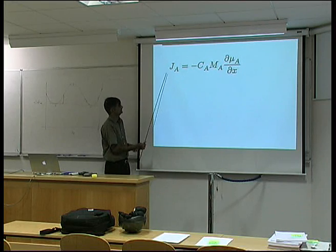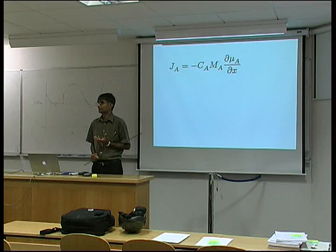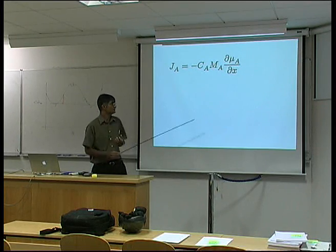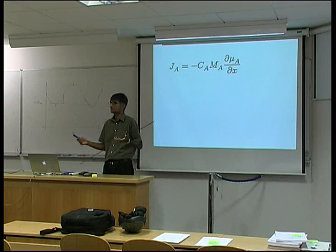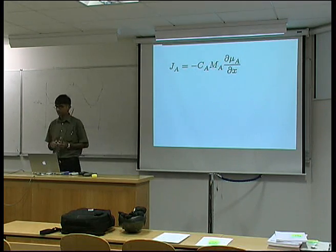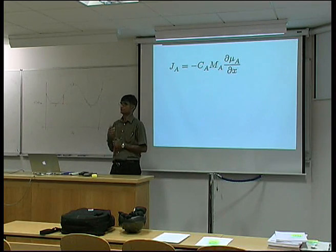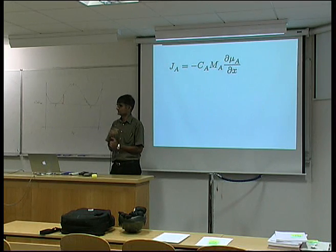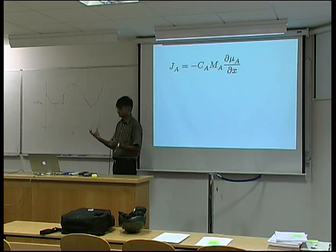The flux is now proportional to the chemical potential gradient, and the proportionality constant is known as the mobility of A atoms - M is simply a proportionality constant which is the mobility of A atoms. Of course, we have a huge amount of theory expressed in terms of diffusion coefficients, so it's useful to relate this rigorous equation to the empirical Fick's laws.